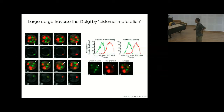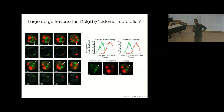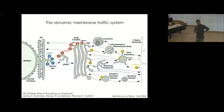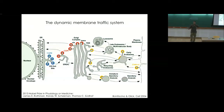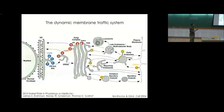Watch what happens: a structure is green, then it has both red and green, then it becomes red. If you quantify the fluorescence profile you see a green peak followed by a red peak. What's happening is that one compartment is converting into another — which means the static cartoon picture of the Golgi in textbooks is wrong. Textbooks change slowly and biology changes much more rapidly.